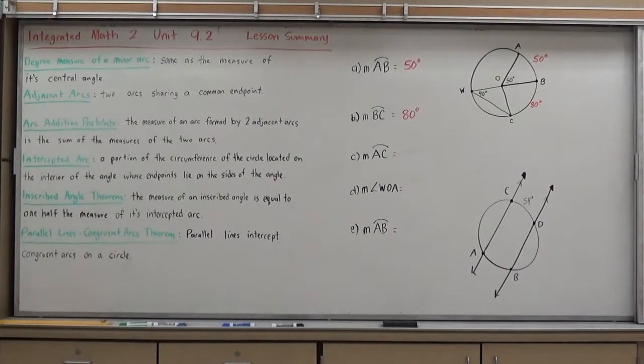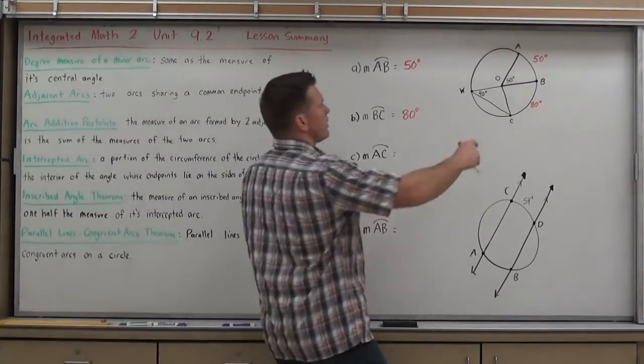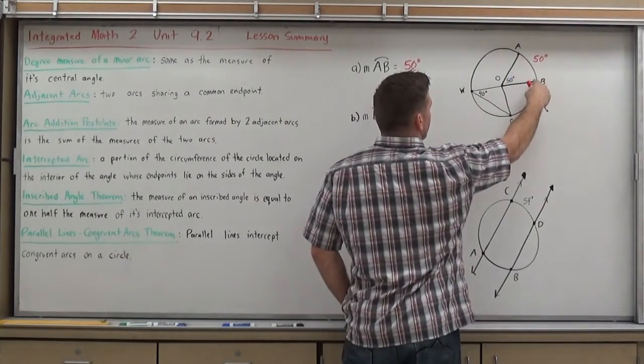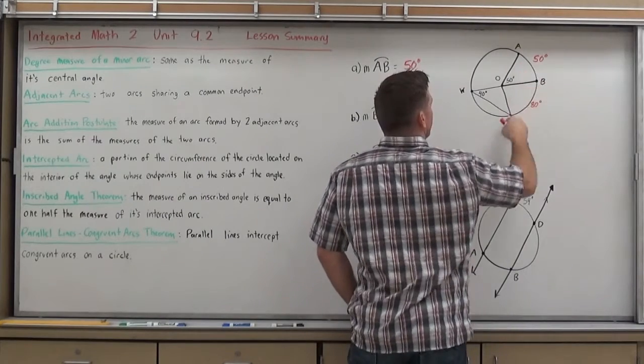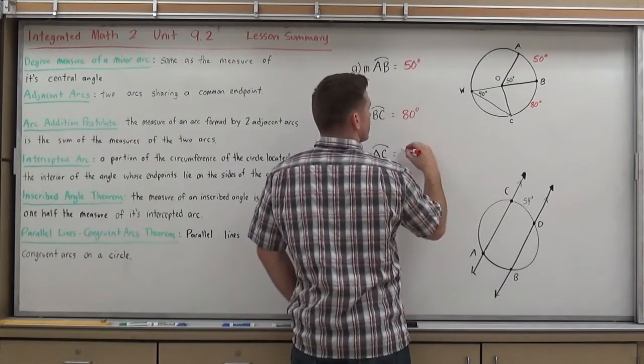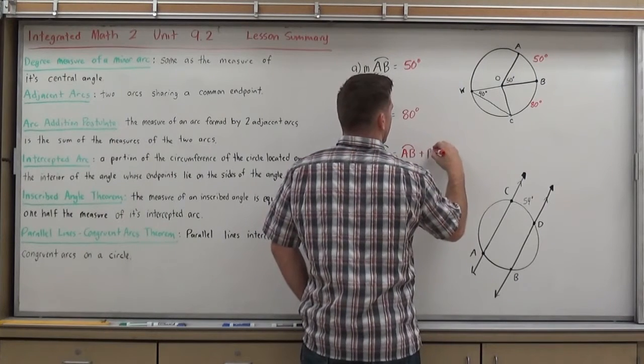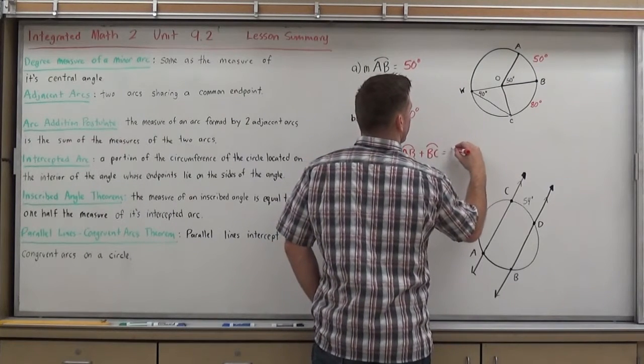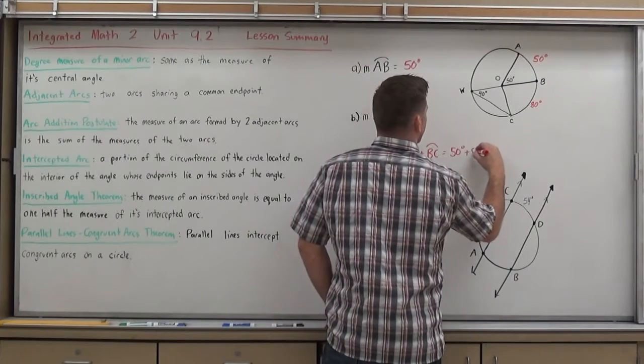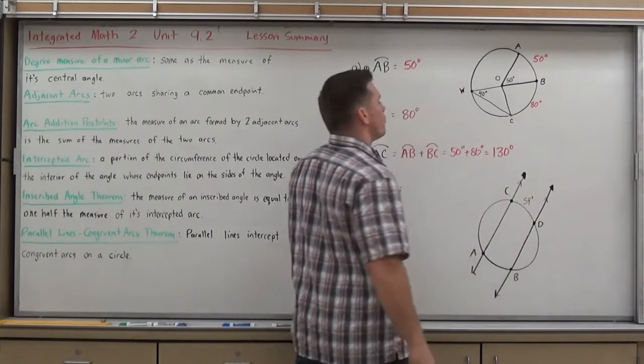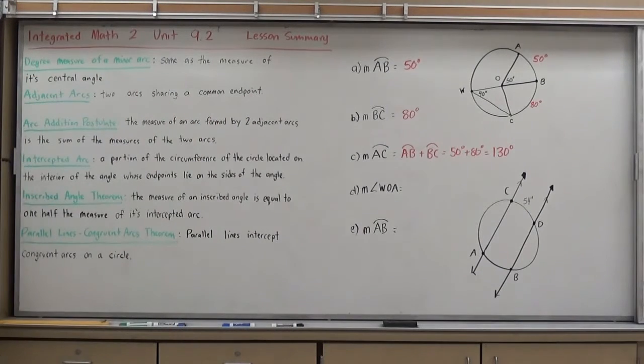So that makes arc BC 80 degrees. Now they're asking me to find the measure of arc AC. Here's where I can start to implement my arc addition postulate. Arc AB and arc BC make arc AC. So I can actually just add arc AB and arc BC together to get 50 degrees plus 80 degrees. Meaning that that full arc is 130 degrees.